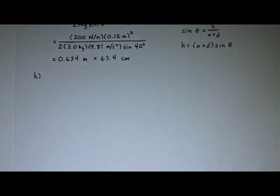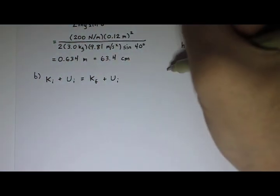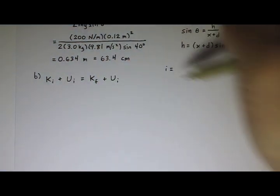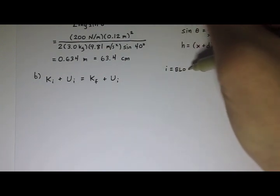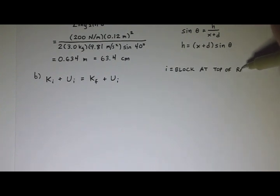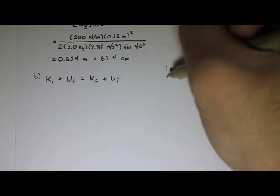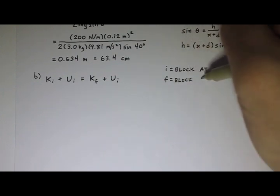For Part B, I want to know what was the speed of the block at the moment it touched the spring. This is another place where I can use conservation of mechanical energy. I'm going to say that initial is when the block was at the top of the ramp, just as before, except now my final is going to change. My final now is going to be when the block touches the spring.